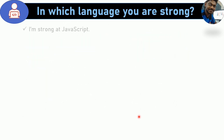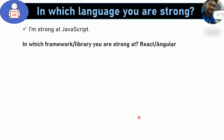The next question is: which language are you strong in? Basically, you can say you use React. So we will use JavaScript. When you write product code, in which framework or library are you strong? You can mention React or Angular — whichever you are strong in.